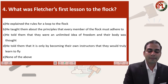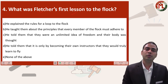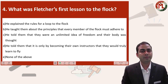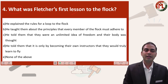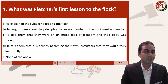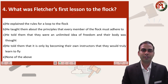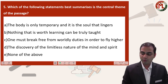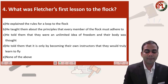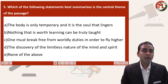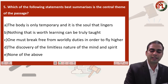Question number four asks: what was Fletcher's first lesson to the flock? Questions starting with 'what' typically refer to factual information — explicit details stated in the passage. From our five questions, we have implicit questions, explicit factual questions, and vocabulary-based questions. Questions with 'what' are usually straightforward, so I encourage you not to leave these kinds of questions.